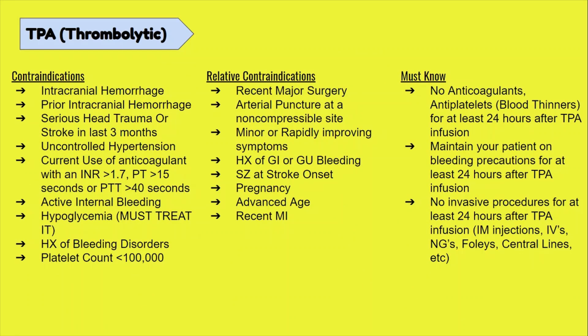Now let's briefly go over the contraindications for giving TPA. Absolute contraindications include current or prior intracranial hemorrhage, serious head trauma or stroke in the last three months, uncontrolled hypertension, current use of an anticoagulant with an INR of 1.7 or higher, a PT of 15 or higher, or a PTT of 40 or higher. There's also active internal bleeding, a history of bleeding disorders, or a platelet count of less than 100,000.